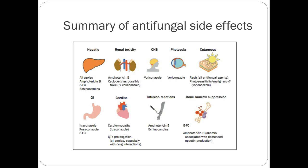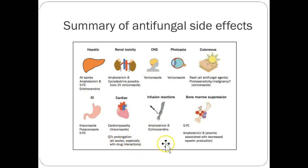Side effects summary for the exam: voriconazole causes vision changes; amphotericin B causes renal toxicity; azole antifungals cause significant cytochrome P450 inhibition leading to drug interaction problems, and also QTc prolongation. Usually we don't care about QTc prolongation for a one-time fluconazole dose, but for sustained use with drug interactions causing elevated concentrations, that could cause issues. We'll talk more about QTc prolongation as we discuss more drugs throughout the course.